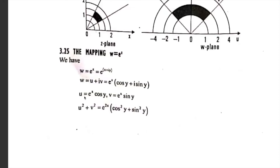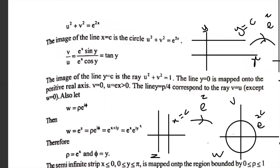Squaring the real and imaginary parts: u² + v² = e^(2x) · cos²y + e^(2x) · sin²y = e^(2x)(cos²y + sin²y). Since cos²y + sin²y = 1, we get u² + v² = e^(2x).